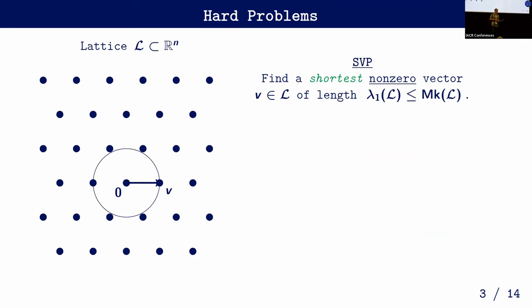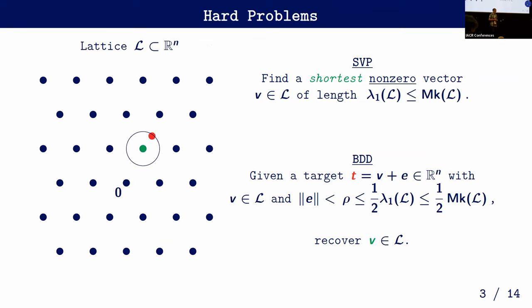The most famous hard problem is probably the Shortest Vector Problem, where given any basis of a lattice you are asked to find the non-zero shortest vector. The inhomogeneous version is the Bounded Distance Decoding problem: given a target lying at most distance ρ from the lattice, recover the closest lattice point. These two problems are in general very hard to solve; the best algorithms are exponential in the dimension. In dimension two it seems easy, but it becomes much harder in higher dimensions.